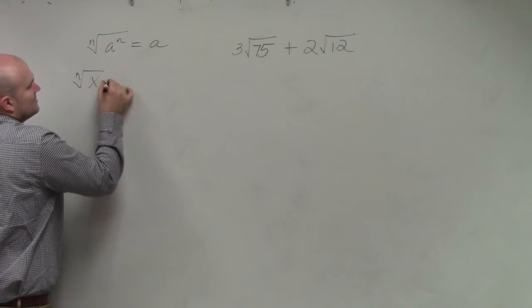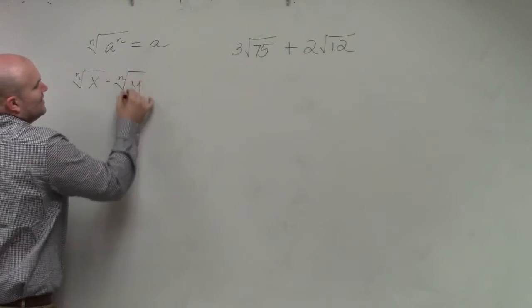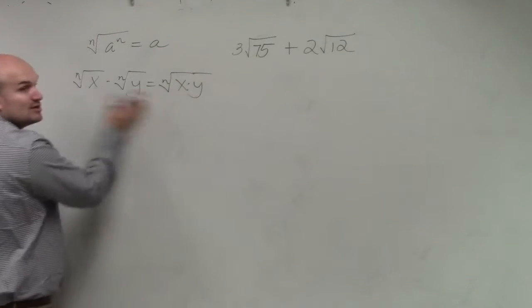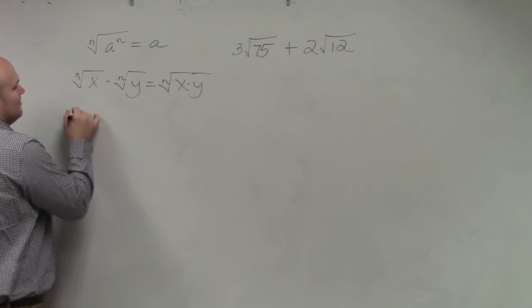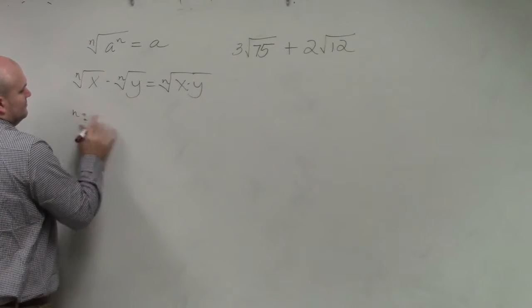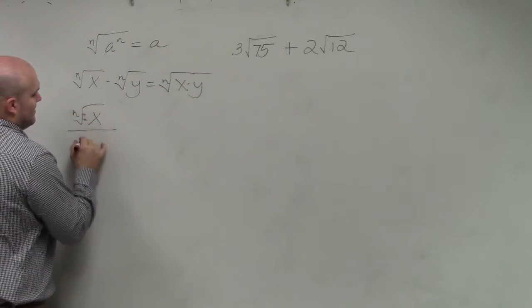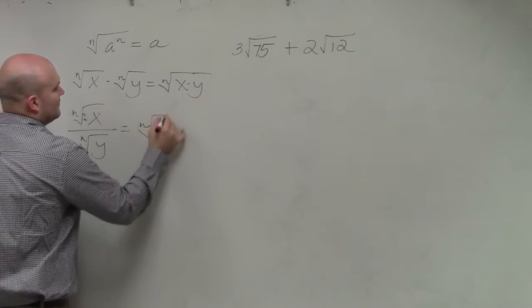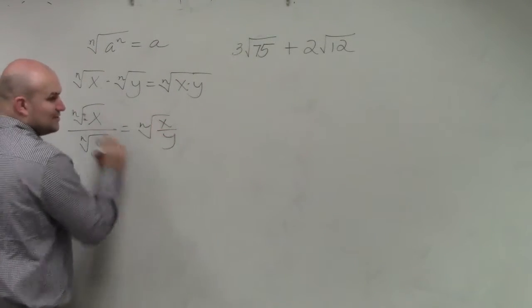The nth root of x times the nth root of y equals the nth root of x times y. That works the other way as well. Remember the nth root of x divided by the nth root of y equals the nth root of x divided by y. That goes the other way as well.